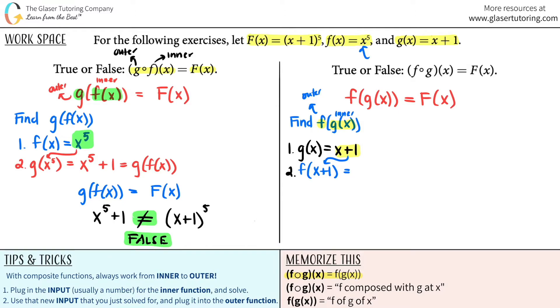So in this case, it would be X plus one raised to the fifth because there was only one X here. And that's what you're plugging in for the X value. And this would be the same thing as saying F of G of X. So now when it comes down to it, does F of G of X equal capital F of X?